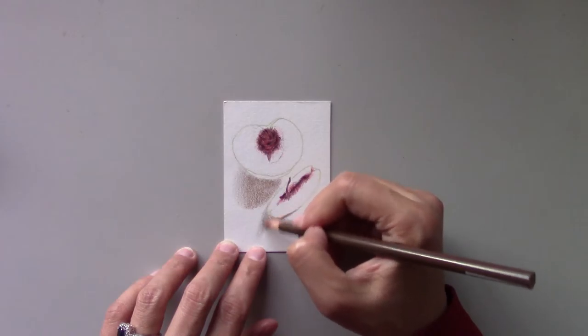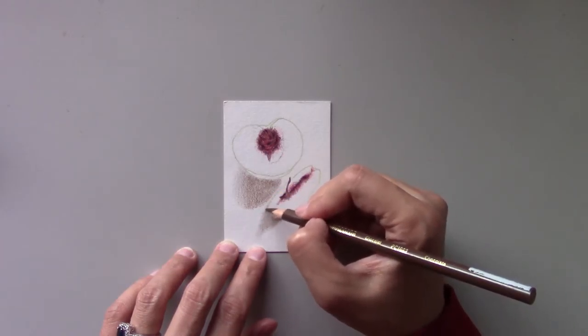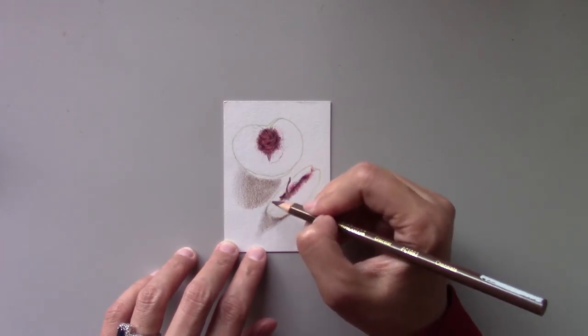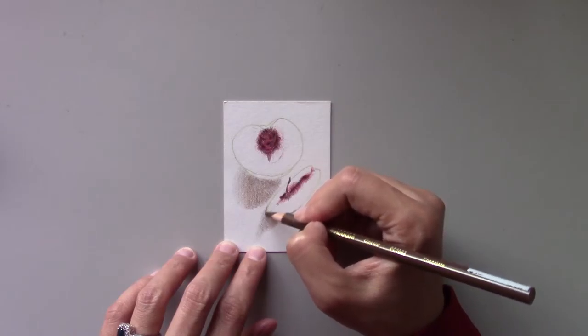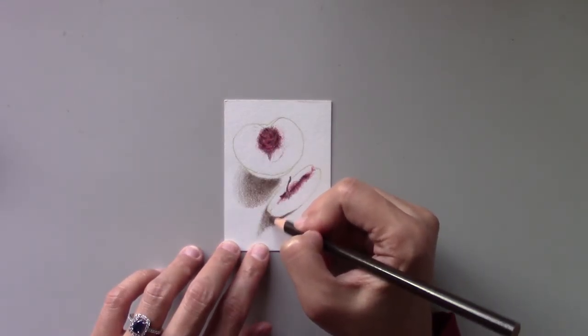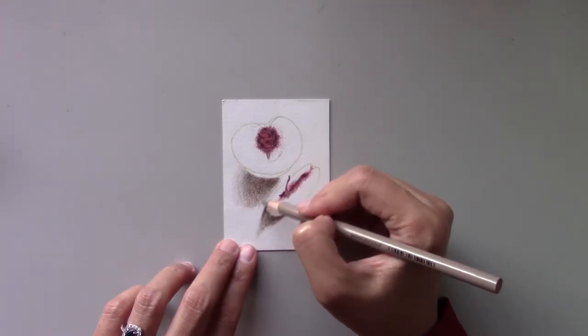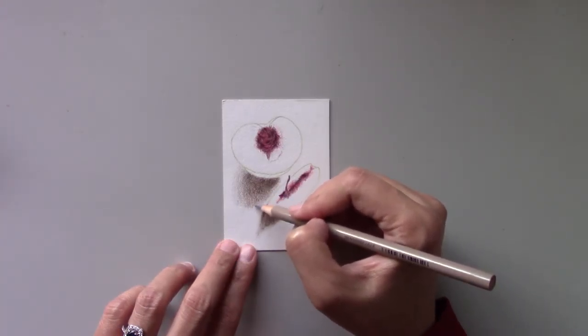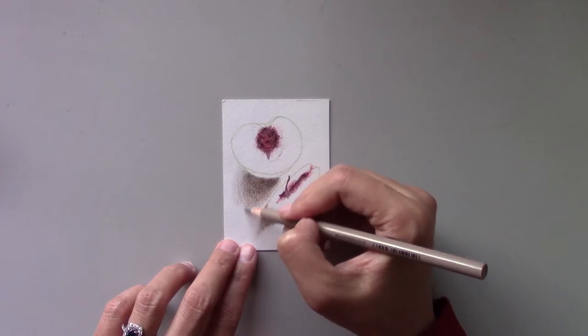Now model the shadows with French grey 70% using medium pressure and blend the colors evenly. I use dark brown to darken the layers for the shadows under the peach. Go back to French grey 50% to smooth the edges of the shadows with really light pressure.